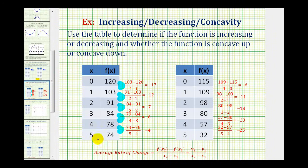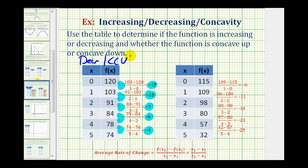Looking at the average rates of change, they're negative 17, negative 12, negative 7, negative 6, and negative 4. While these are all negative, these values are increasing, which means the function is concave up. So this is a decreasing function that is concave up.